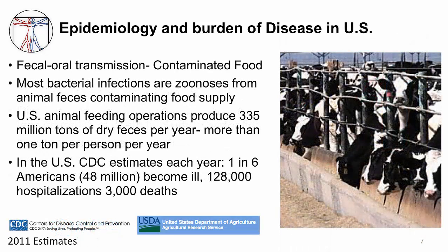In contrast to developing countries, contaminated water from human feces is not the problem in developed countries because they have sewage systems. In the U.S., the problem stems from food sources that are contaminated by animal feces. Animal feeding operations like the one in the picture produce more than one ton of animal feces per person per year. So essentially, a person becomes infected with bacteria that typically live in the gastrointestinal tract of animals.